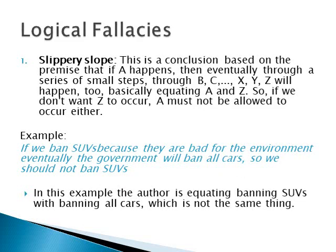Our first kind of logical fallacy is called slippery slope thinking. This is a conclusion based on the premise that if A happens, then eventually, through a series of small steps, B, C, D, E, and so on will happen too — basically equating step A to step Z. So if we don't want step Z to occur, A must not be allowed to occur either. This is a logical fallacy.